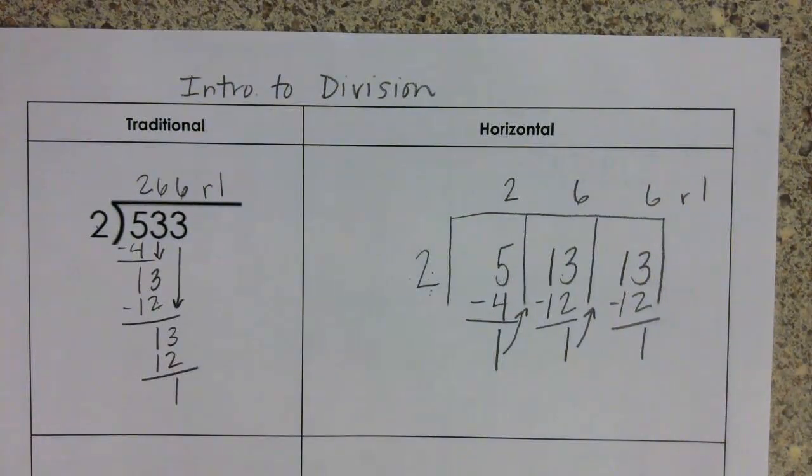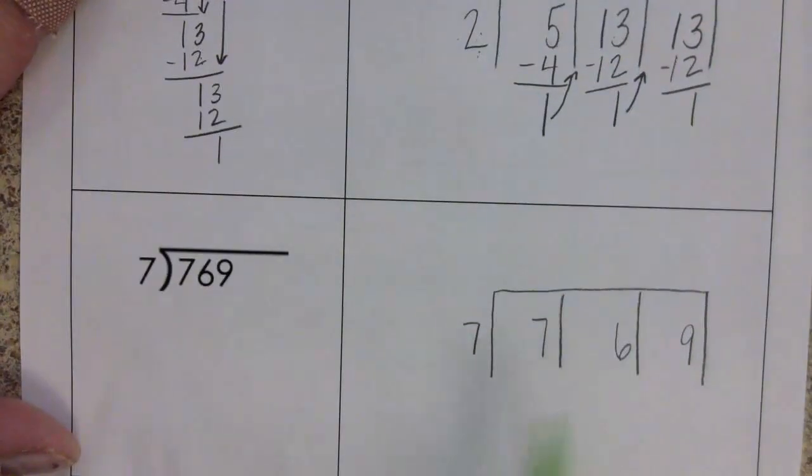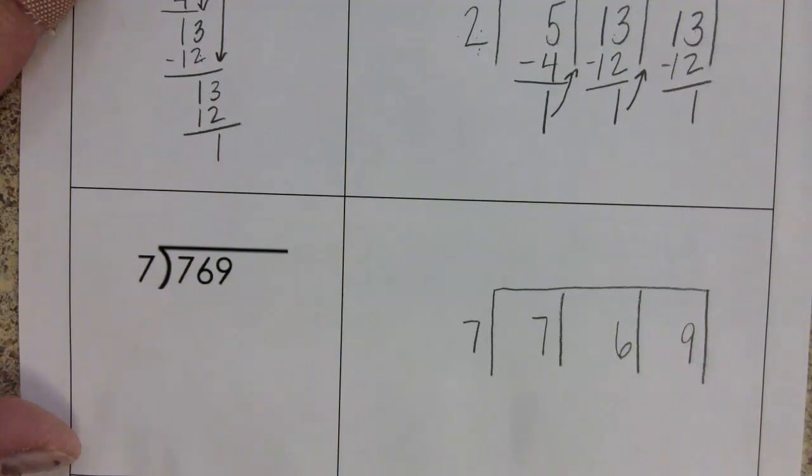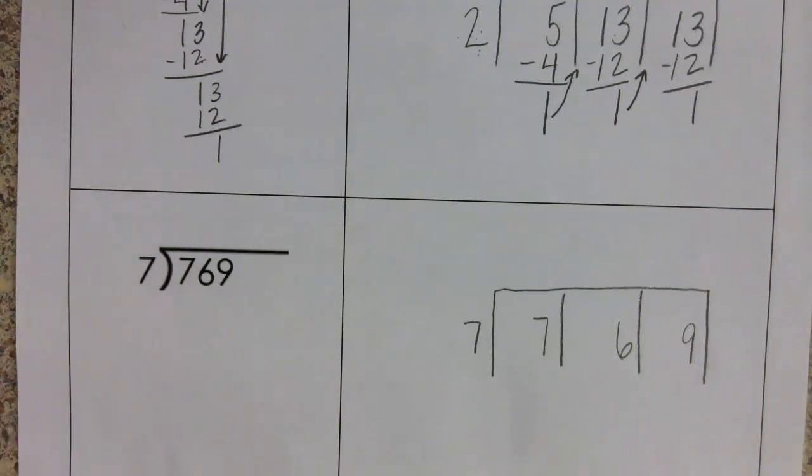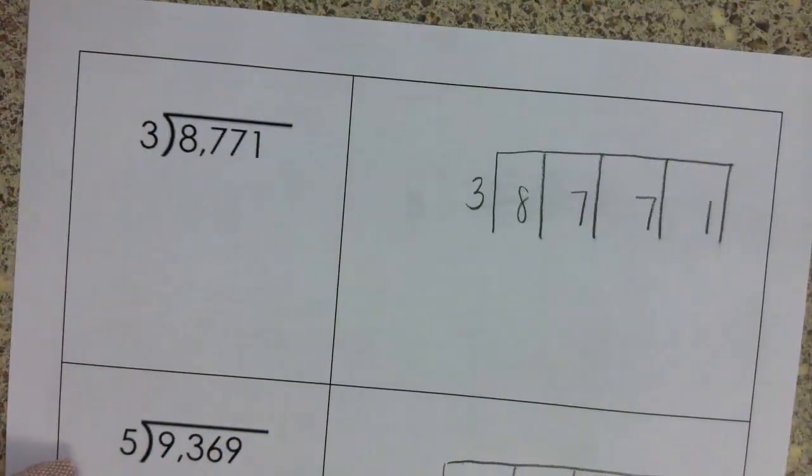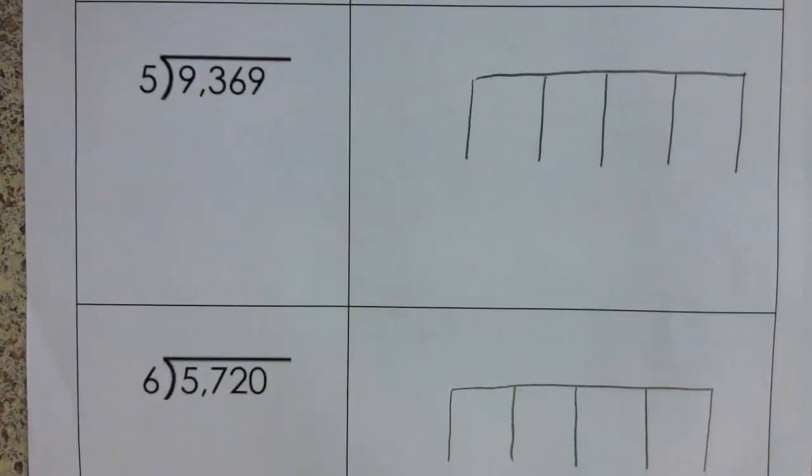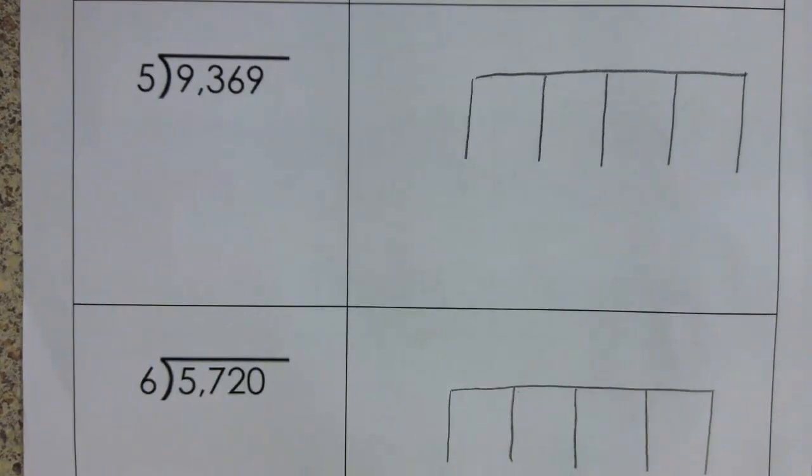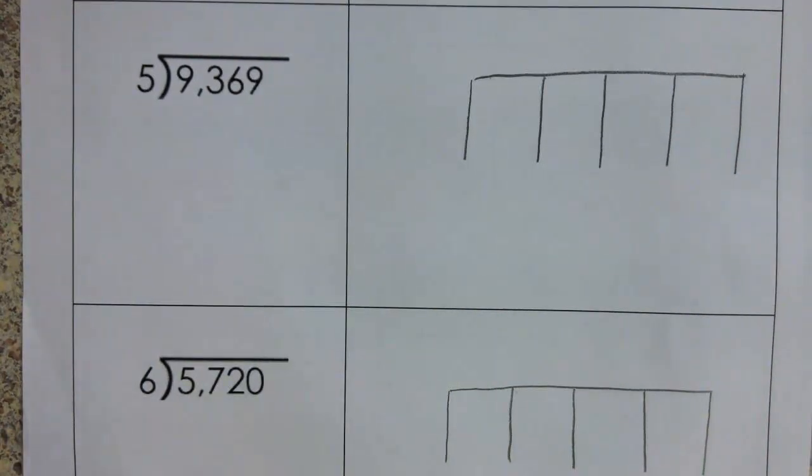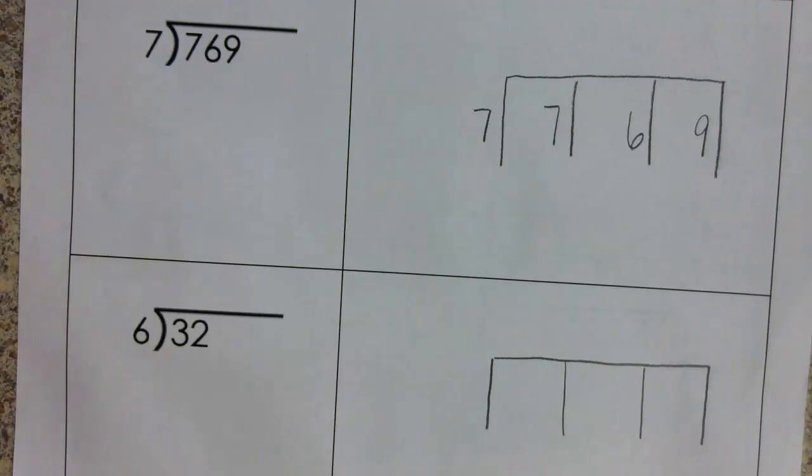For today, we are going to do 3 digits divided by 1 digit, 2 digits divided by 1 digit, 4 digits divided by 1 digit. These are the problems we'll work on today in class. And once we get comfortable with the single digits, we will then move on to 2 digit divisors.